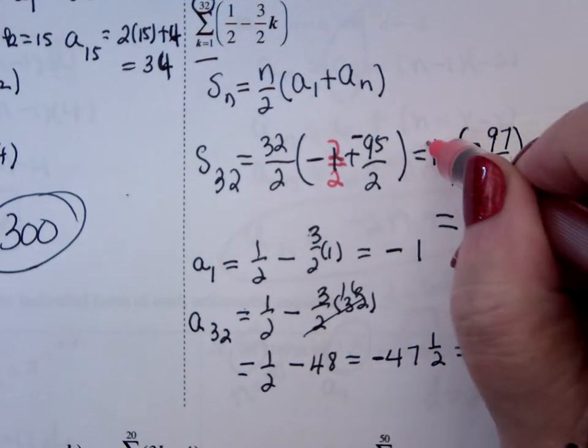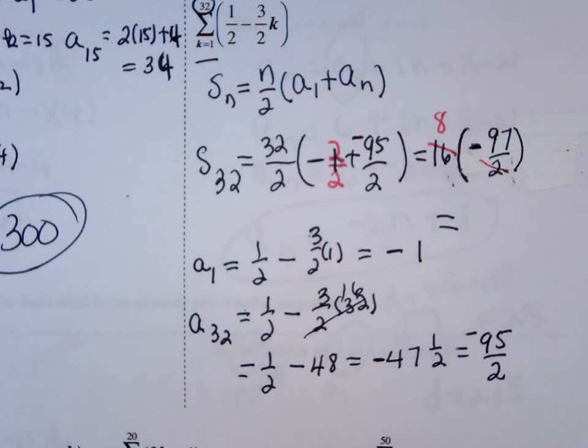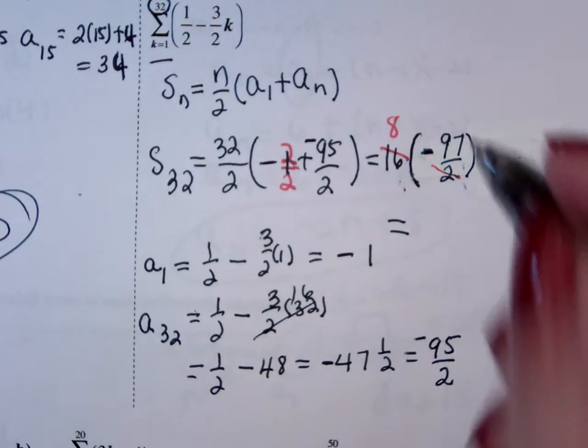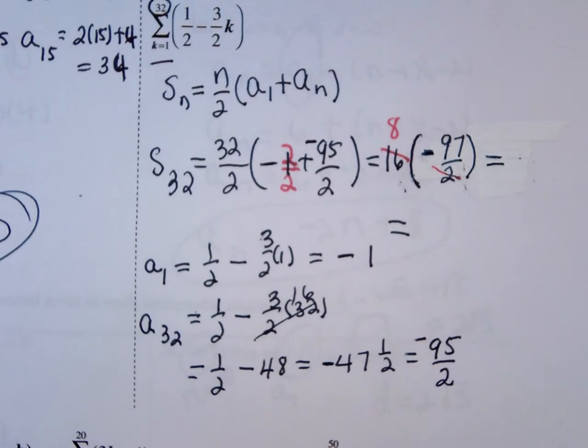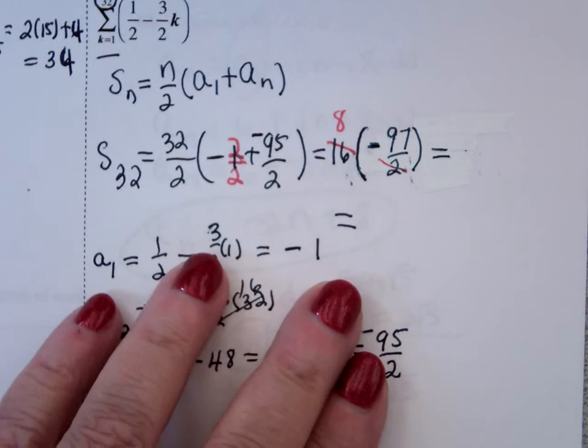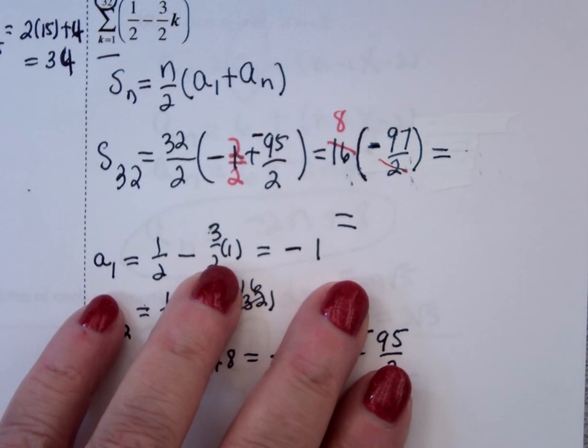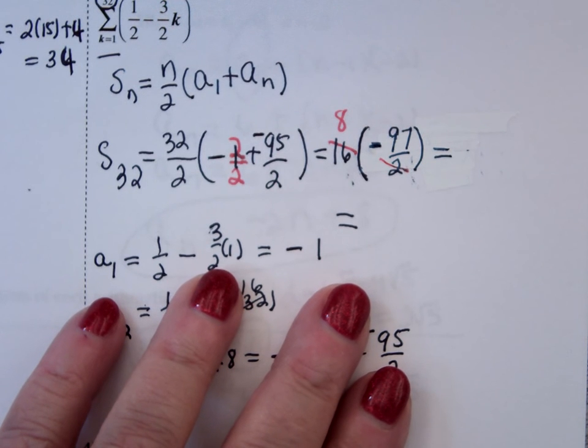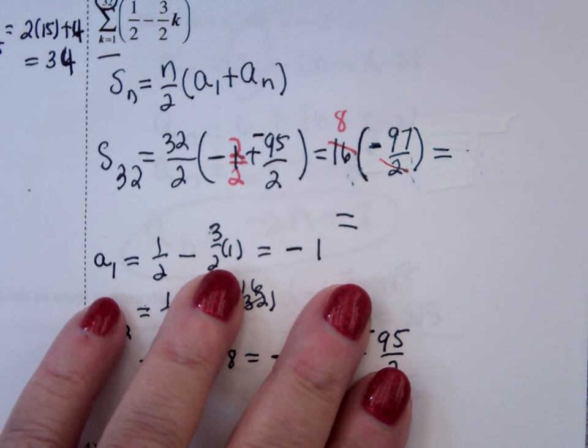2 divides 16 8 times. This is ugly. I wonder where I got this one from. So it's 8 times negative 97, which is negative 776.